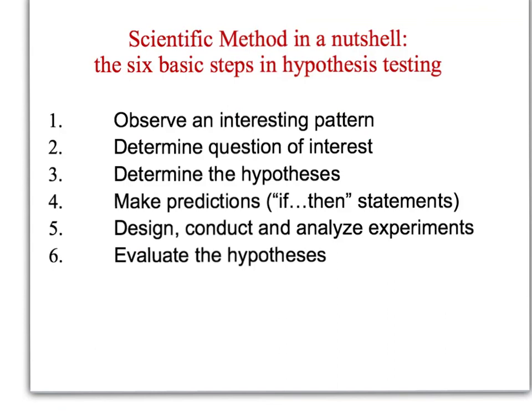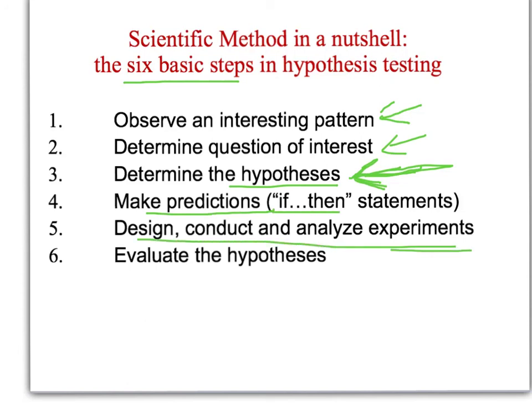So let's go over the six basic steps in hypothesis testing. In the scientific method. So making observations is the first most important thing. Determining what your question is. Then from the question actually stating this as a hypothesis, which is an answer, a possible answer to your question. Hypotheses have to be testable. So the possible answer to your question has to be something that you're able to test in some way. Making predictions, which we usually do in if-then statements. And then we design, conduct, and analyze experiments. And finally, we evaluate whether or not the hypothesis was supported or not.